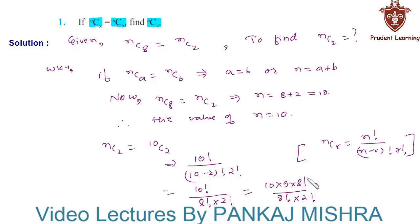Here we can cancel 8 factorial both from the numerator and denominator. Factorial 2 is nothing but 2 itself. 2 ones are 2 and 2 fives are 10, so we are left with 5 into 9, that is 45. Hence, the value of Nc2 is 45.